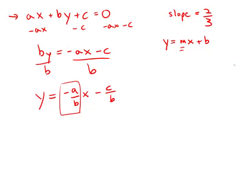This piece right here, -a/b, is the slope, and we know that slope equals 2/3. So if I want the value of b, all I need to get is the value of a, and then I could solve for b.